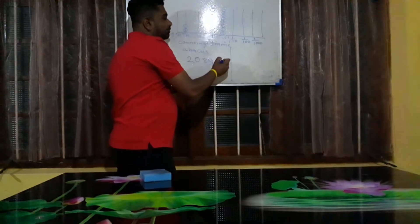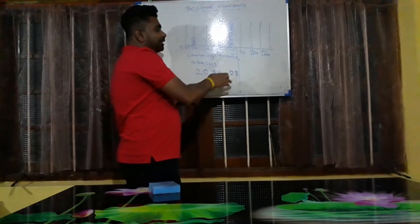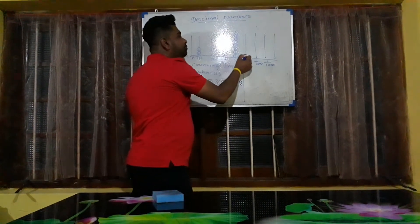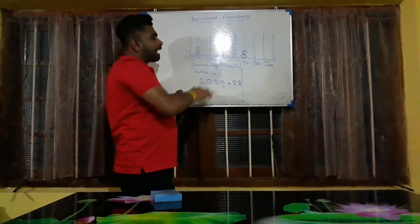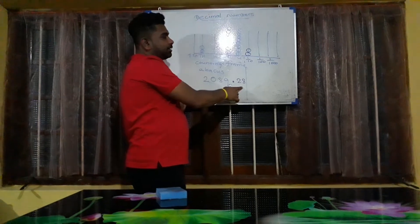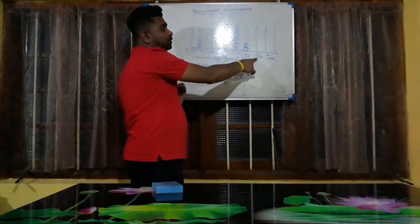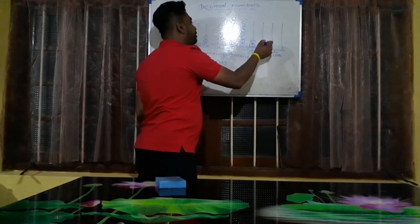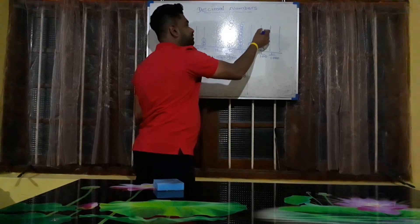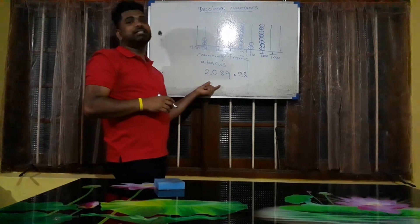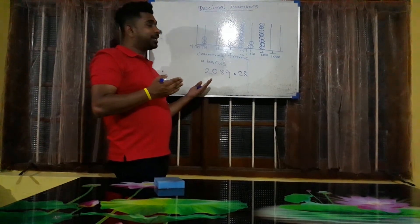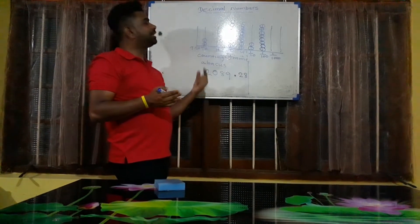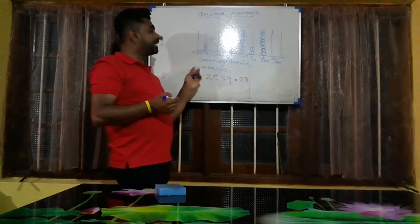If I add some numbers here — 2 and 8 — in the first decimal place, that means 1 upon 10, there are 2, so you need to draw 2 beads. In the second decimal place, 1 upon 100, there are 8, so you need to draw 8 beads. I use a big number to explain how to represent a decimal number in a counting frame, or abacus.